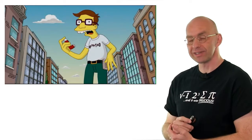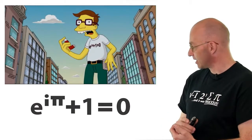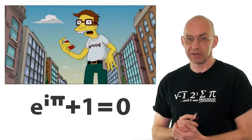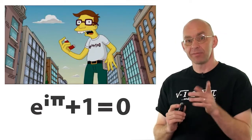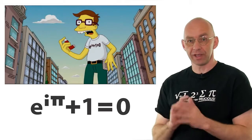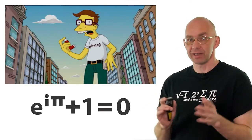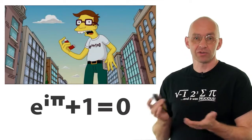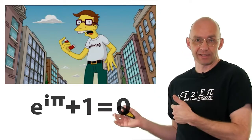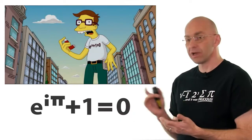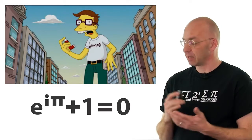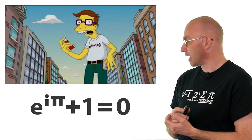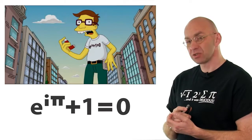There we go, there on a t-shirt. It says e to the i pi plus one is equal to zero. Very mysterious. Many mathematicians think this is the most beautiful thing ever, even better than Pythagoras theorem. What I want to do today is make sense of this identity. It's called Euler's identity, named after the very famous mathematician Leonard Euler, and it's quite mysterious.